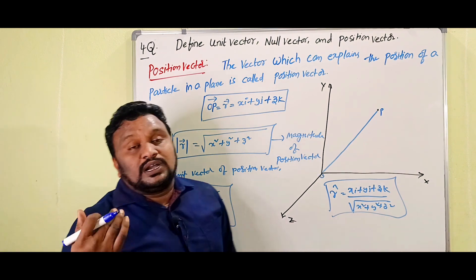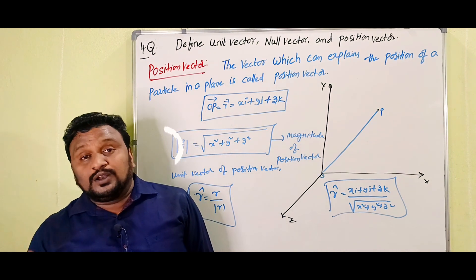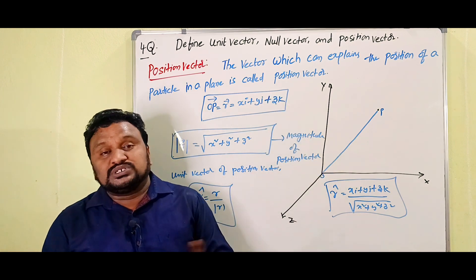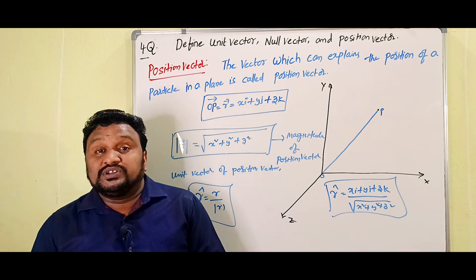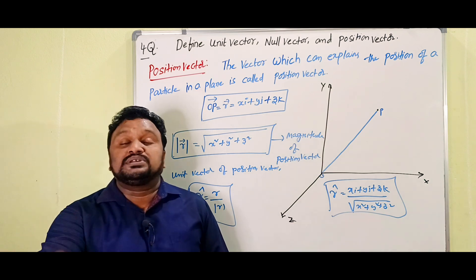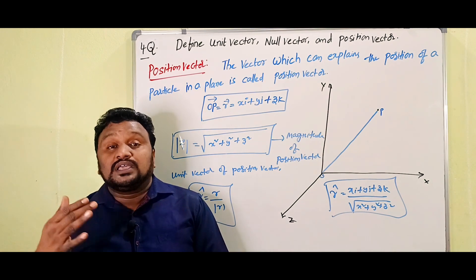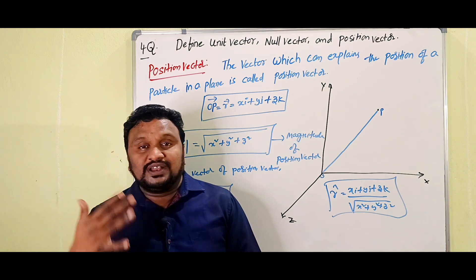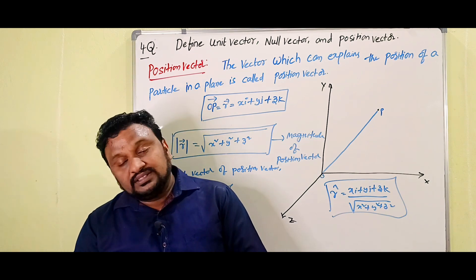So children, this is the definition and explanation of position vector, null vector, and unit vector. This is my symbol — our most important question. If you like this video, please like, share, and comment. Subscribe to my channel because it is very useful to you — I am giving assurance for that. Thank you.